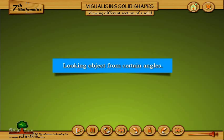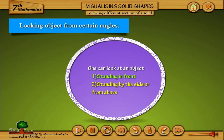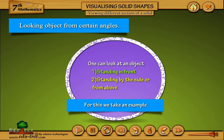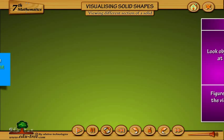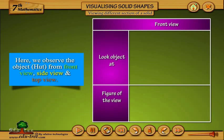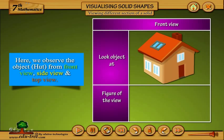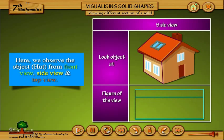Looking at an object from certain angles. One can look at an object: first, standing in front; second, standing by the side; or from above. For this we take an example. Here, we observe the object from the front view, side view, and top view.